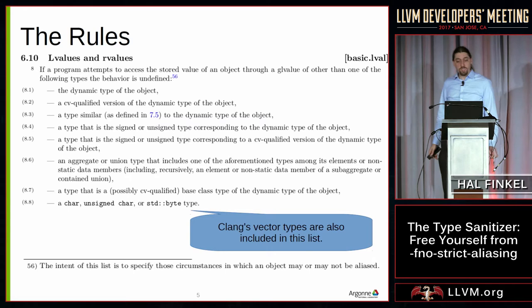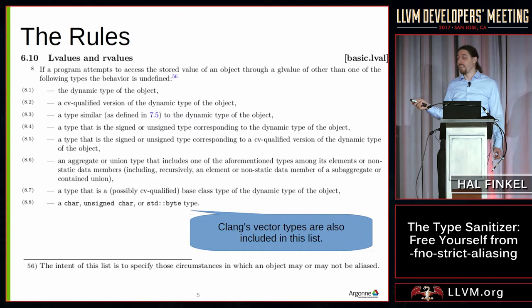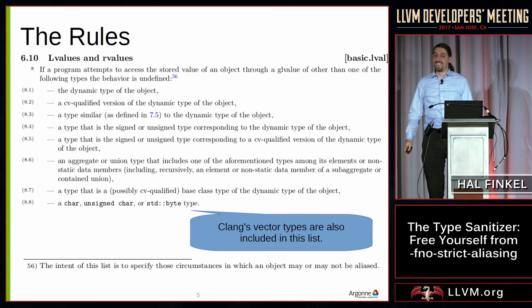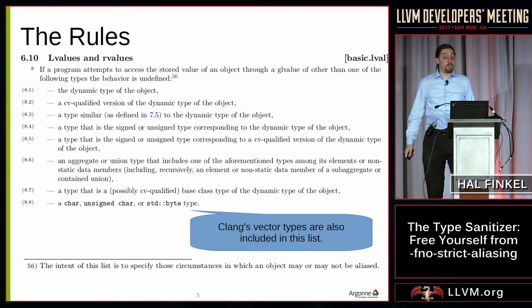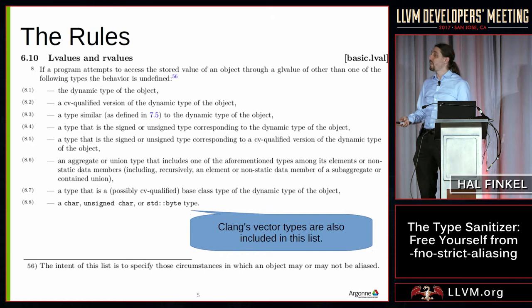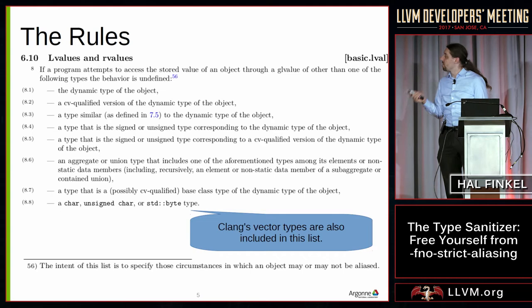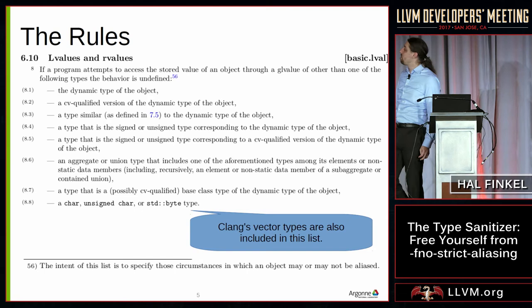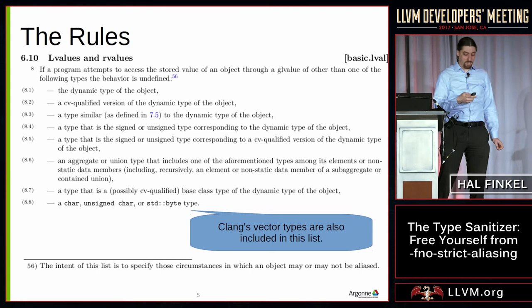One thing I'll point out is that if you look carefully, the char type and unsigned char type are on the list, but the signed char type is not. We've run across code written by people who mistakenly assumed it was. The idea is there's a fixed set of types you can access given a pointer of a given type, and you shouldn't access objects of other types. I'll also note that Clang's extension for vector types are also universally aliasing — just like char — and that turns out to be important in practice.